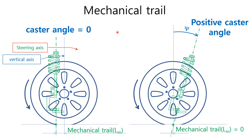You cannot say there is a mechanical trail whenever you have a non-zero caster angle. In the left picture, the steering axis is perpendicular to the road surface. Therefore, caster angle is equal to zero, but we still have a considerable mechanical trail, as much as this amount. On the other hand, in the right picture, the steering axis meets the vertical axis on the road surface here. Therefore, we have positive caster angle, but the mechanical trail is equal to zero.